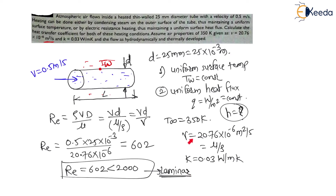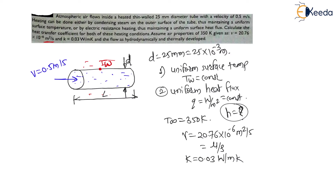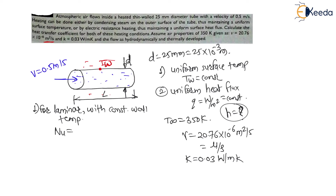For laminar, fully developed flow with constant wall temperature, we need to calculate the convective heat transfer coefficient h. For this condition the Nusselt number is constant. For laminar fully developed flow through a pipe with constant wall temperature, Nu = 3.66. This value is very important to remember.